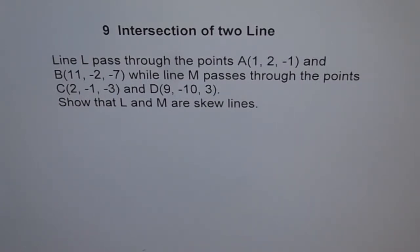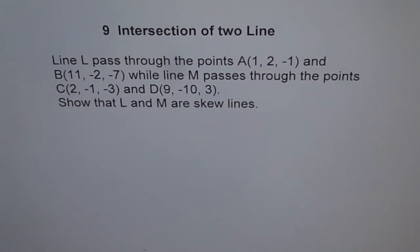Skew lines are lines which are not parallel, but still they don't intersect, since they lie in parallel planes. For skew lines, the scalar triple product should not be equal to zero. If the scalar triple product is not equal to zero, then they are skew lines.